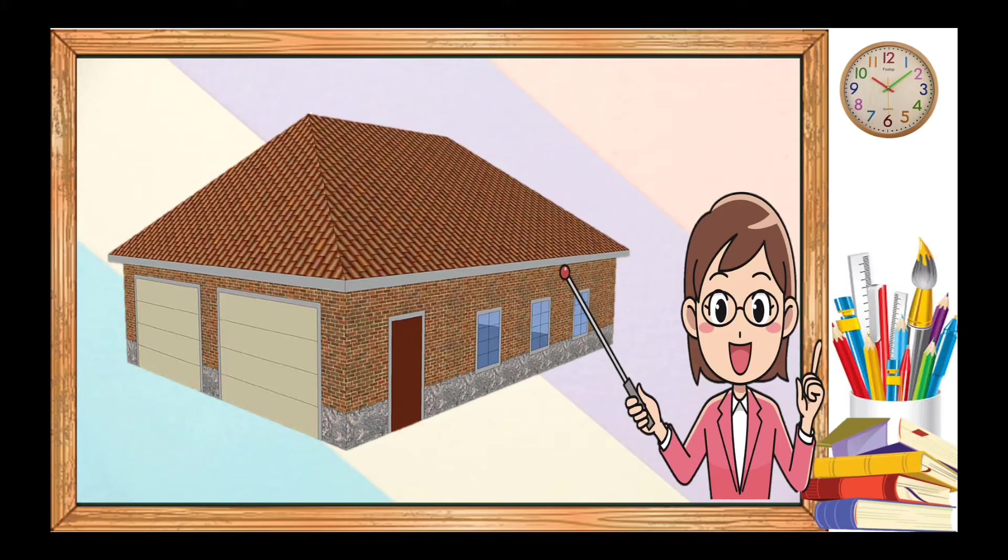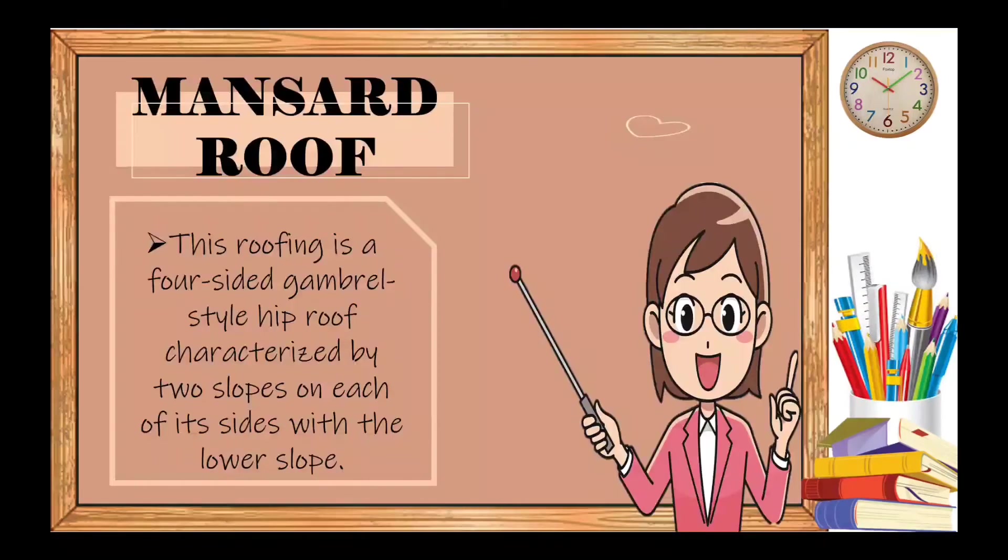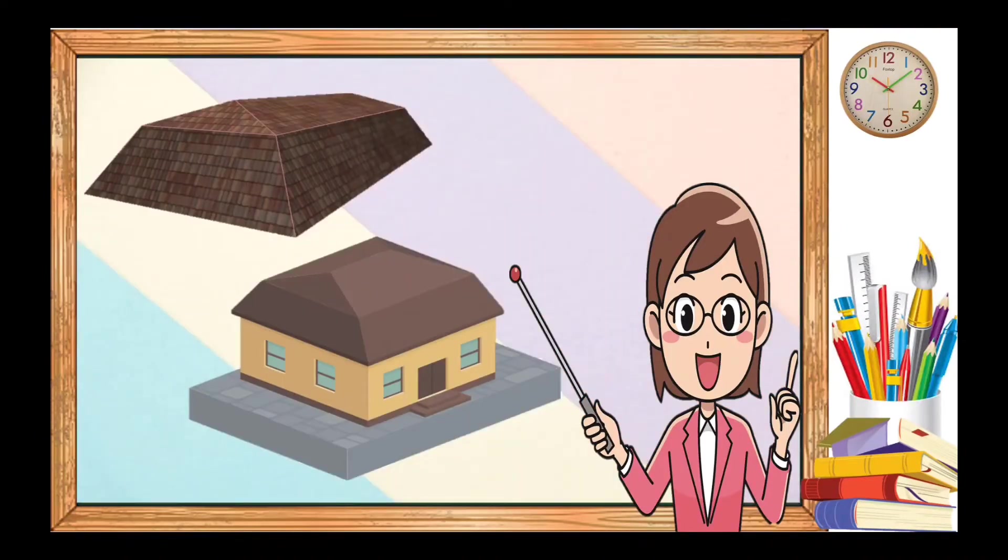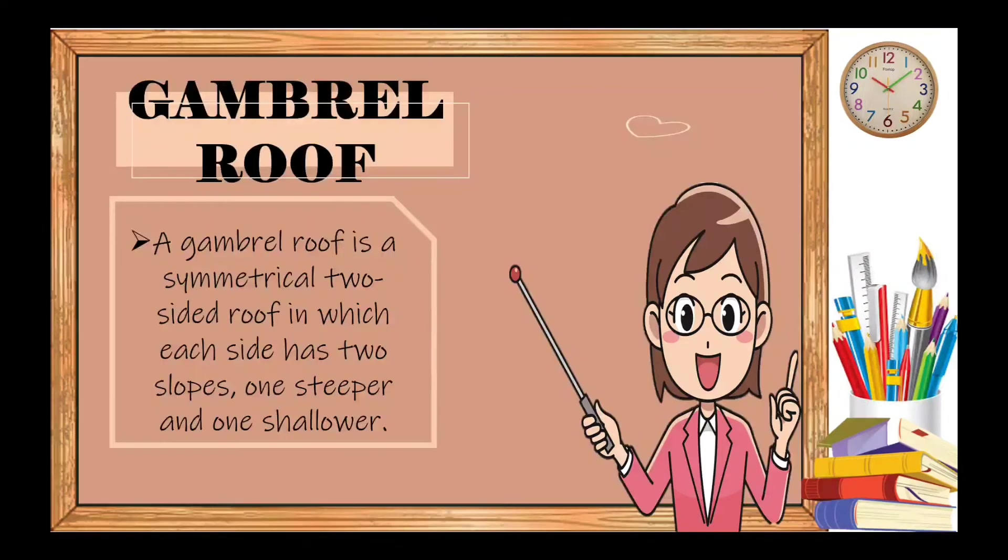The third type is mansard roof. This roofing is a four-sided gambrel-style hip roof characterized by two slopes on each of its sides with the lower slope. It is a French design and it is more difficult to build than the hip or gable roof. It allows more room on the inside and in most cases creates an extra space.